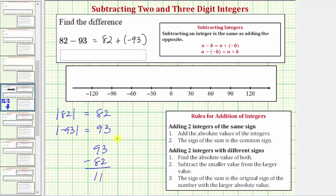Again, it's negative 11 because negative 93 had the larger absolute value. So this sum equals negative 11 which also equals 82 minus 93.